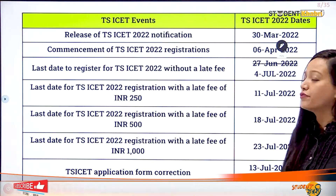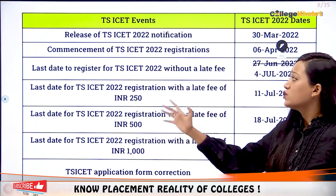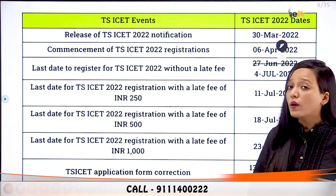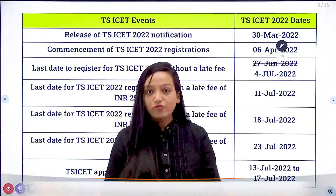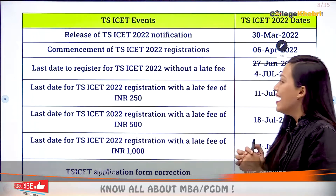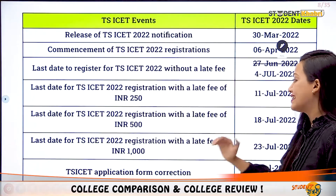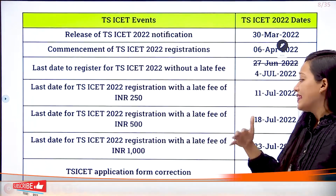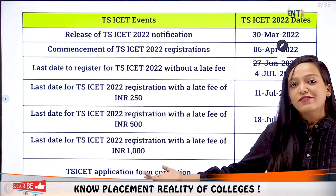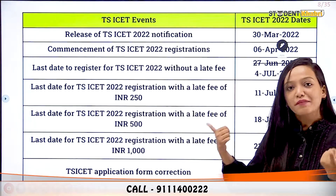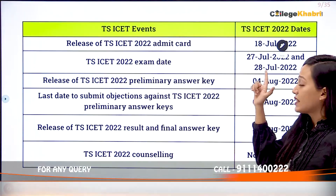Regarding important dates: the notification was released on 30th March and registration began from 6th April. The last date to register without a late fee is 4th July — so if you're looking for MBA colleges in Telangana, fill out the form as soon as possible. You can apply with a late fee of 500 rupees till 11th July, with a late fee till 18th July, and by paying 1000 rupees late fee you can apply till 23rd July. The application form correction window is open from 13th to 17th July.